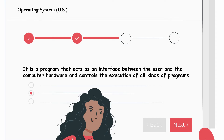The operating system is an interface, an intermediary between the user and the computer hardware. For example, when we code in C language we just write printf and the output is displayed on the screen — we don't know what is happening internally. All that is controlled by the operating system. If there were no operating system, we would have to code for printf ourselves, and each time we used printf we would have to write that code again and again. Printf is also a system call, which we'll cover further.